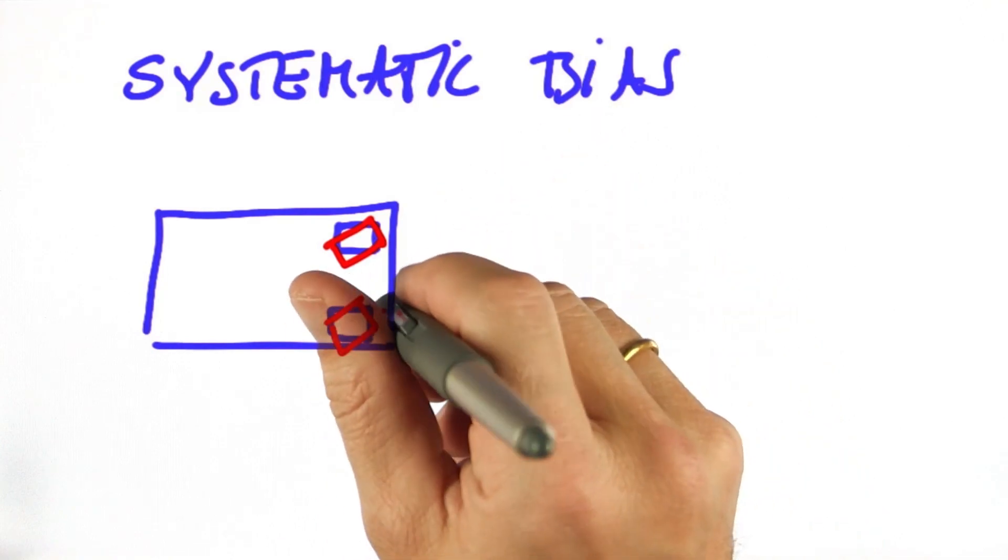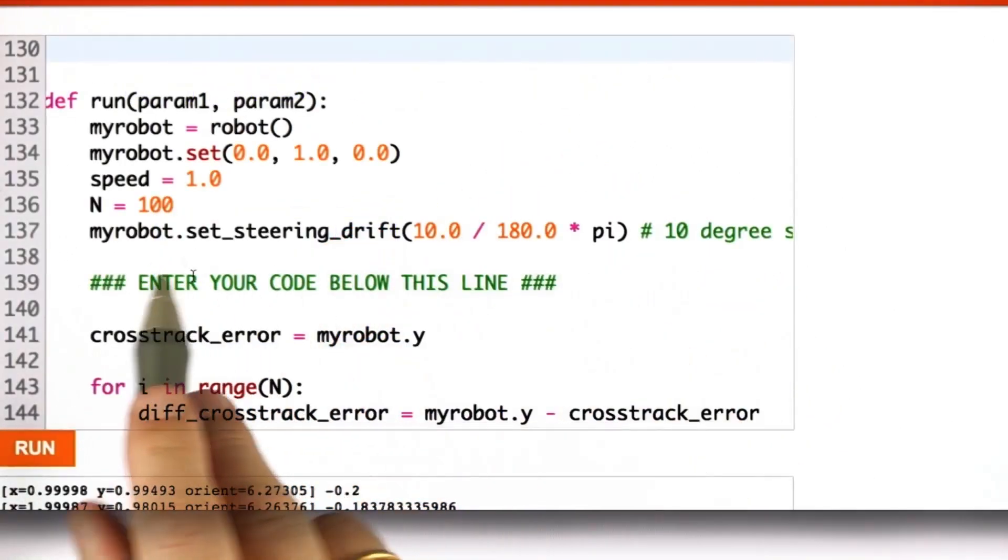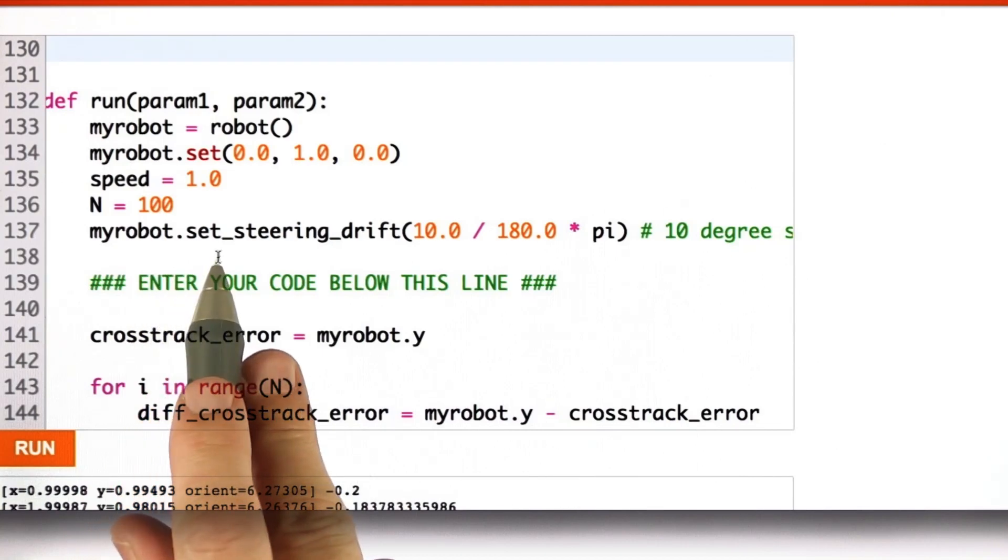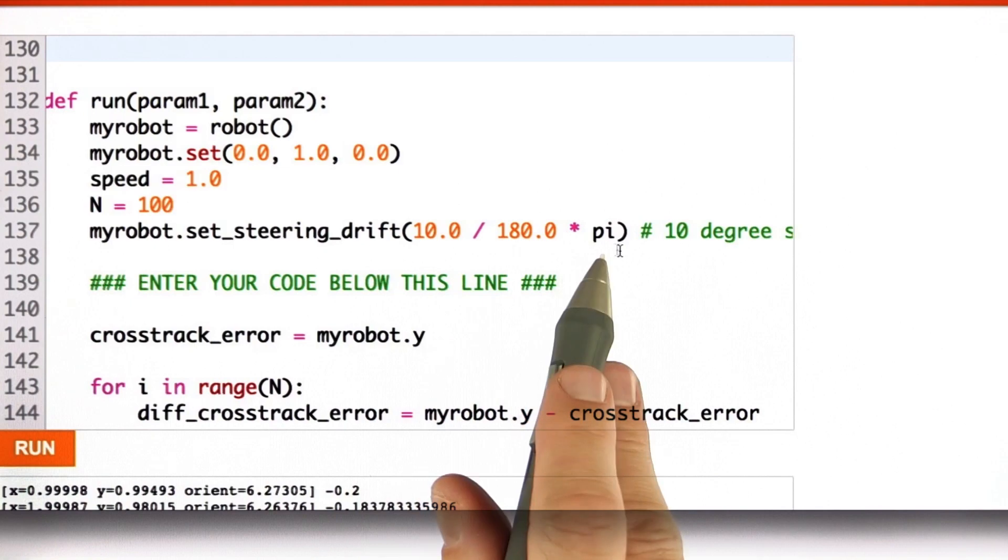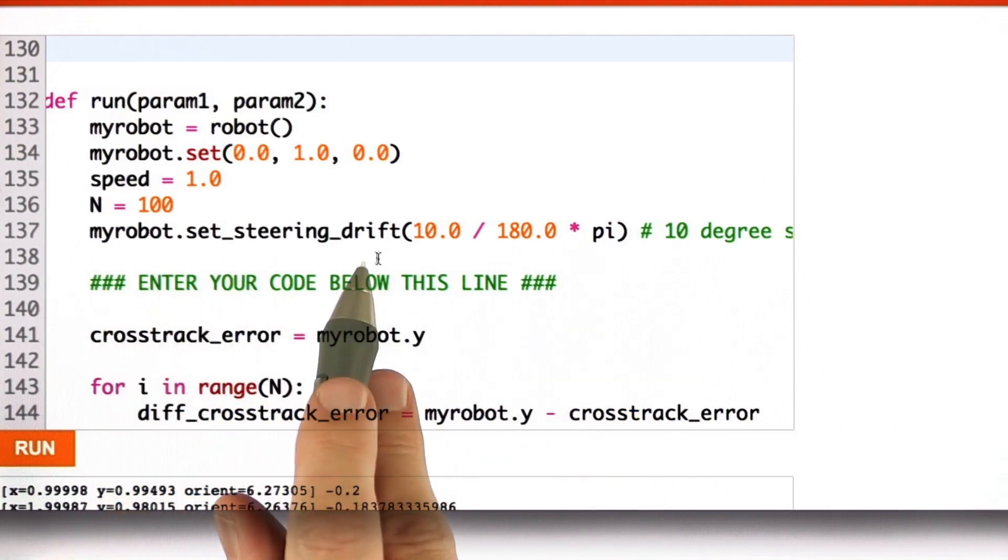But let's try this out with our proportional controller. So, I'm now adding a line that sets the steering drift to be 10 degrees, which in radians is this expression over here, using the setSteeringDrift command.